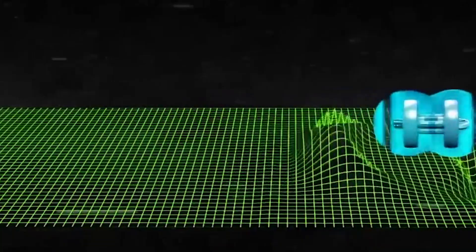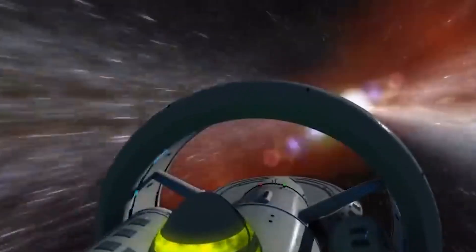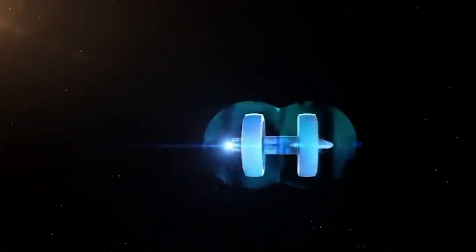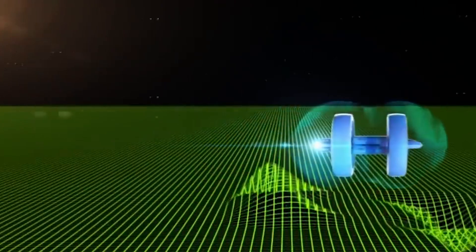Some theories propose that faster-than-light could be achieved by warping spacetime or creating shortcuts through higher dimensions, allowing a spacecraft to effectively jump from one point in the universe to another without having to travel the full distance at sublight speeds.